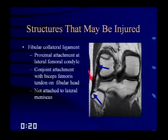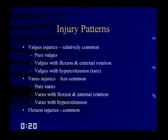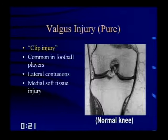Injury patterns: I divide these into valgus, varus, and flexion injuries. Valgus injuries are relatively common because you're more likely to get hit from the lateral side of the knee. Starting with the simplest: the clipping injury, very common in football players. A force from the lateral side creates compressive forces in the lateral compartment — causing bone contusion if the bones hit — and distractive forces on the medial side, resulting in MCL tear. The key concept: whatever side you have bone contusions on, look at the opposite side for soft tissue injury.